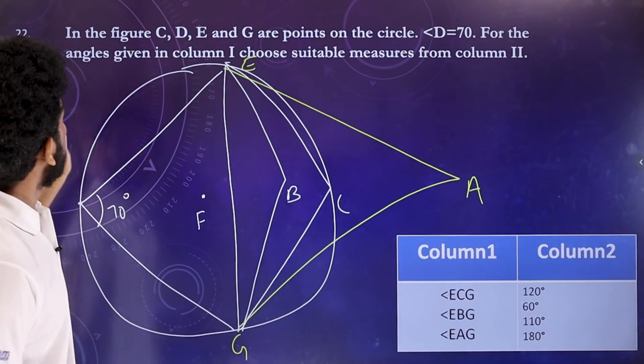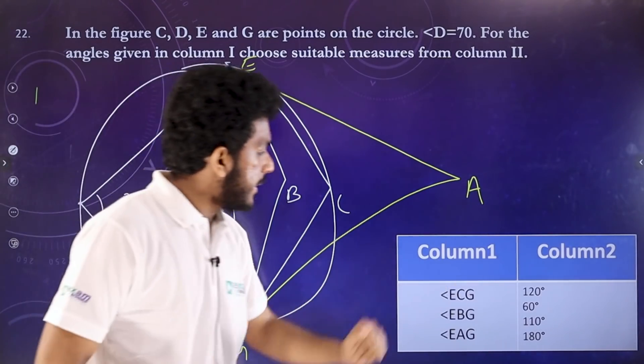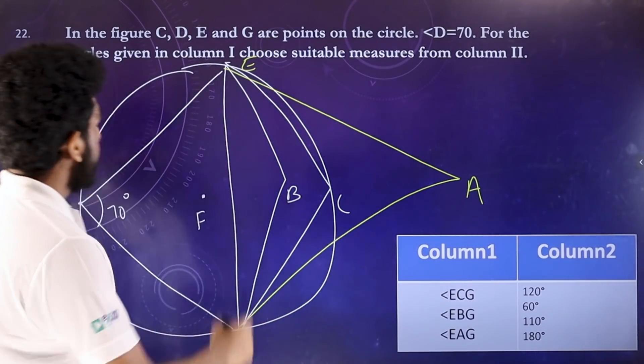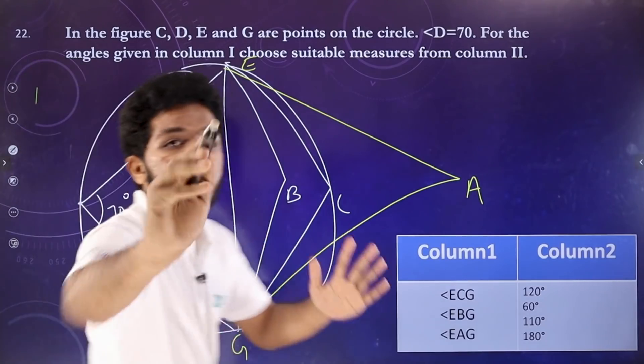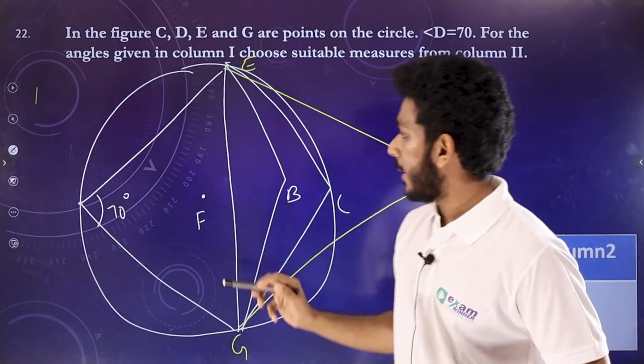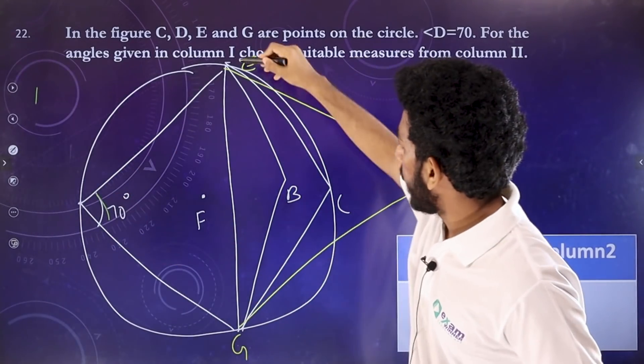We will answer this one. Next, I'll have another interesting one. What is ECG? ECG — Cyclic Quadrilateral. This is 70. It is not a quadrilateral.